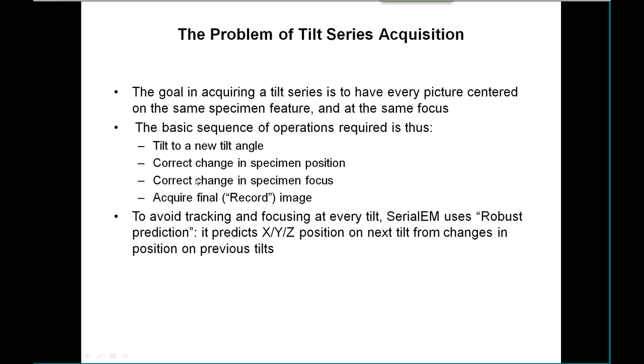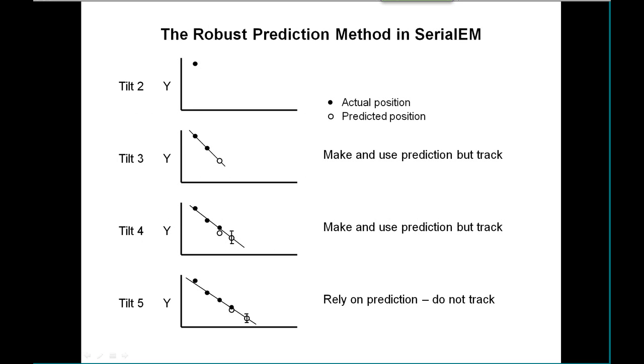To avoid the operations of tracking and focusing at every tilt, what SerialEM does is it uses what I call robust prediction. It predicts the position in the three dimensions on the next tilt from the changes in the position on previous tilts. The way that works is shown here. This is just one arbitrary coordinate of the three; I've picked Y. We take an image on the first tilt, tilt to the second tilt. At that point, all we know is where it was on one tilt, so we have to track at this point. We get to the third tilt, and we now know where it was on the first tilt and where it was on the second tilt. We can draw a line and make a prediction of where it should be now. So we can use that prediction, but we have no idea how good it is, so we still have to track.